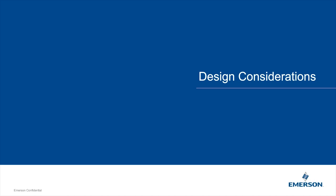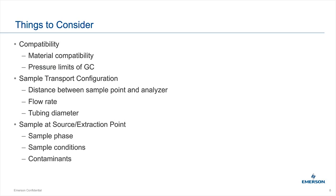Moving on to design considerations. Compatibility always comes up — whether you're running a liquid or a gas, there are many components in the sample handling system and potential interactions. For example, we normally recommend 316 stainless steel, but if you have H2S at certain concentrations or greater, we recommend silica-coated tubing instead. Pressure limits: you could be running at several hundred PSI in your pipe while the GC can only withstand 10 to 30 PSI at sample injection. Sample transportation configuration also matters — where your GC is placed versus the probe or sample point. We always recommend getting the GC as close to the probe as possible.